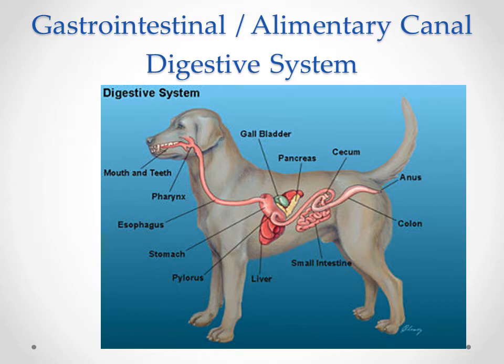Then that ileocecal sphincter or ileocecal valve, into the cecum, which in our carnivores that we're going to be mostly focusing on today, we don't see a very large or impactful or useful cecum. Then finally into the large intestine or colon, and then the rectum and the anus.